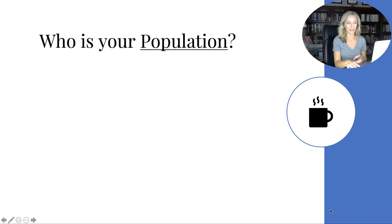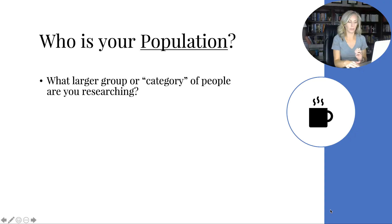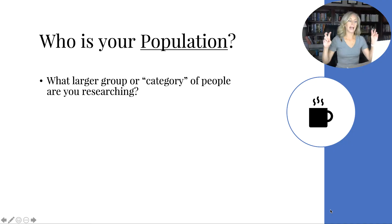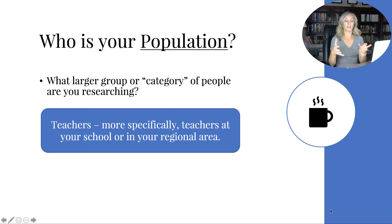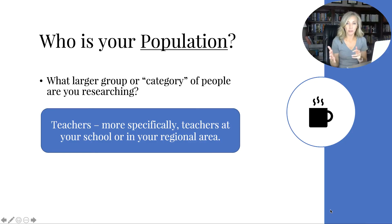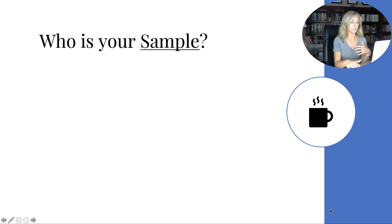Now, who are we going to research? You've got to have a population — the larger group or category of people you're researching. In this case, it's teachers, specifically at your school or in your regional area. Let's say your school has 250 teachers. Are you going to conduct an experiment on all 250, giving them either caffeine or decaffeinated drinks? Probably not.